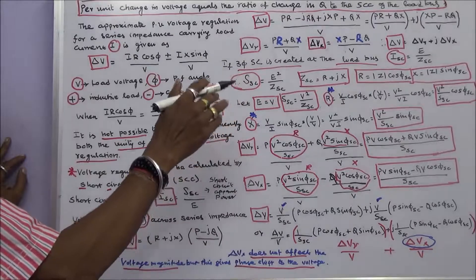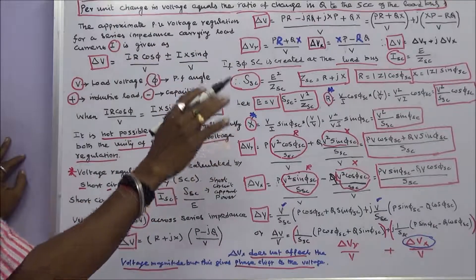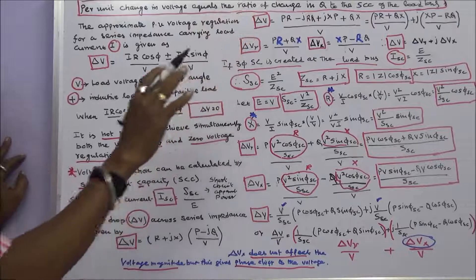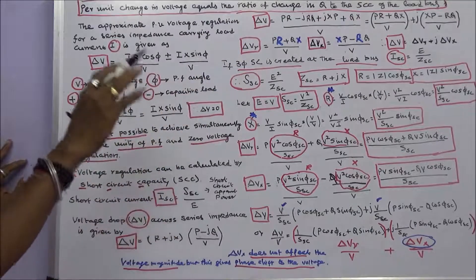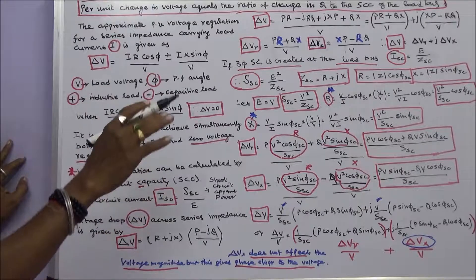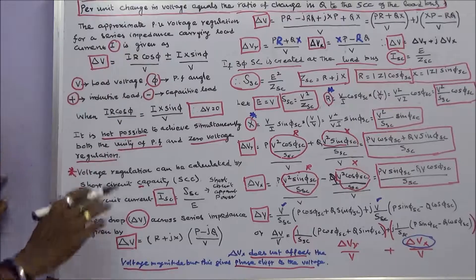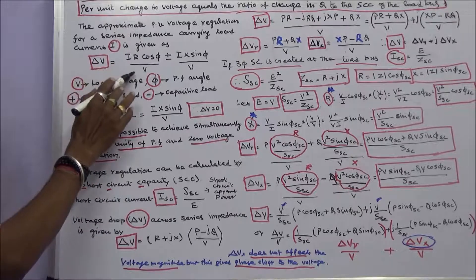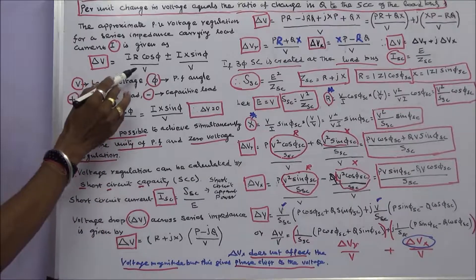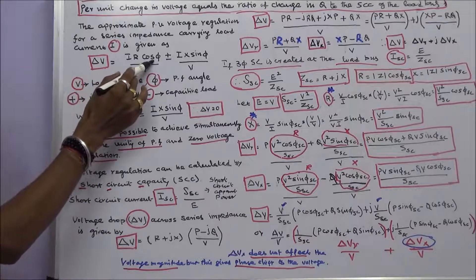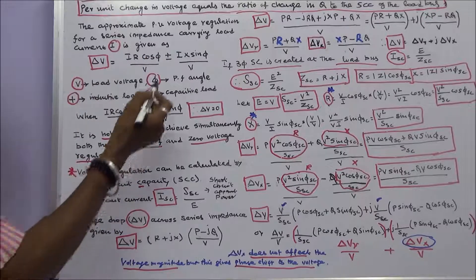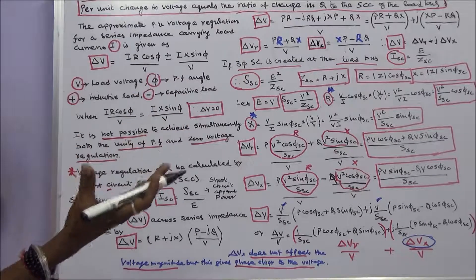In this class we discuss that per unit change in voltage equals the ratio of change in reactive power Q to the short circuit capacity of the load. The approximate per unit voltage regulation for a series impedance carrying load current I is given as: delta V equals IR cos(φ) / V plus or minus IX sin(φ) / V, where V is the load voltage, φ is the power factor angle. The plus sign indicates an inductive load that consumes reactive power; the minus sign indicates a capacitive load that generates reactive power.